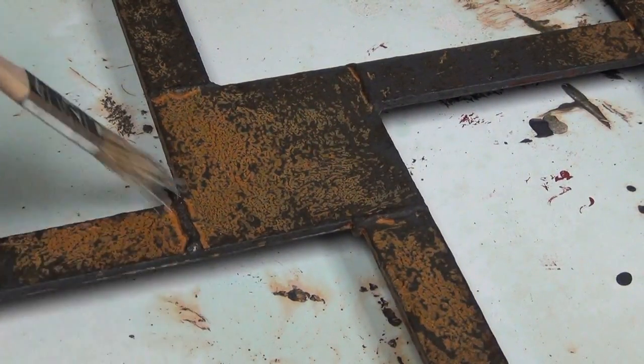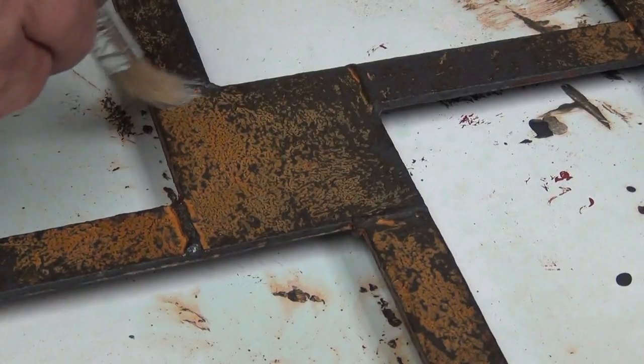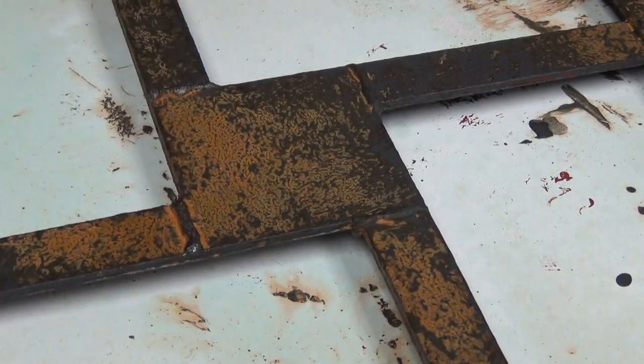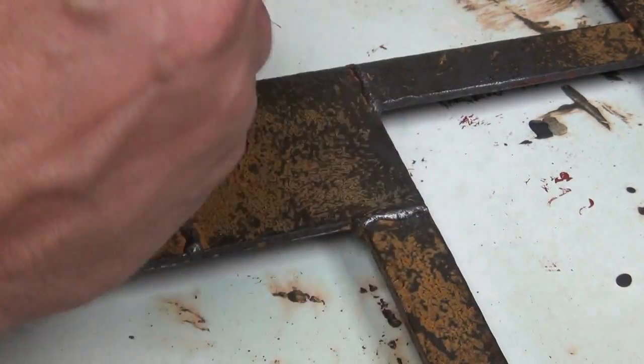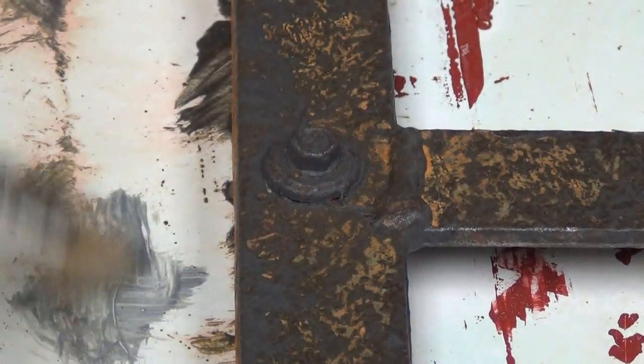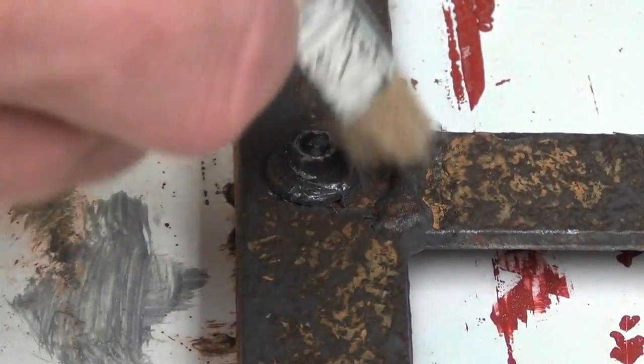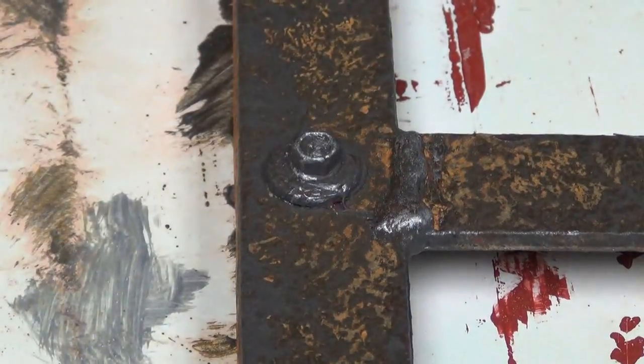Like the corners, the welds, any raised area of the piece—we want to lightly and very carefully dry brush some Silver B over the top of those areas. That adds to the effect of real steel or iron showing through those areas that would be commonly abraded. You'll notice that just adds a lot to those welds and those bolt heads.